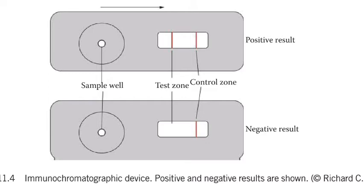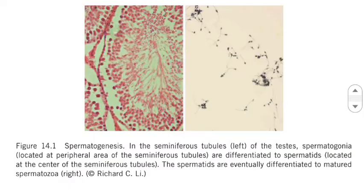However, PSA is also secreted by sweat glands, perianal glands, mammary glands, and paraurethral glands, so its value as a specific indicator of semen stain is slightly reduced. PSA is also found in urine and sweat. Similarly, an elevated amount of PSA indicates that the individual may be suffering from prostate cancer.